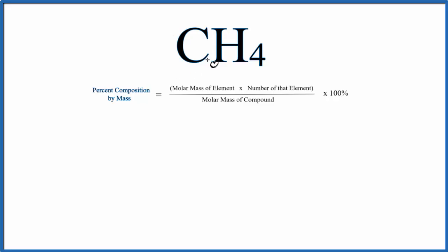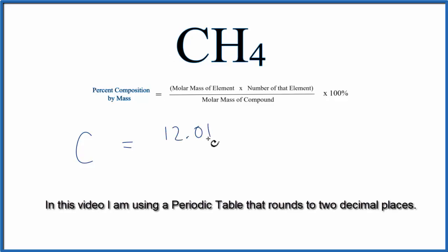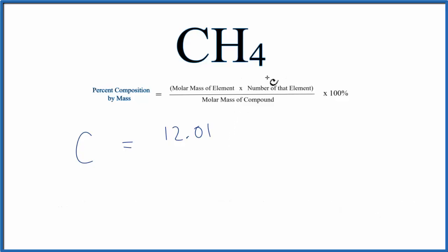So first let's look at the carbon, percent composition by mass of carbon in CH4. So we look up carbon on the periodic table, that's 12.01, and the units are grams per mole. I won't write them, we'll have them on the top and the bottom when we're done, so they'll just cancel out. And we only have one carbon, so we'll leave it like that.